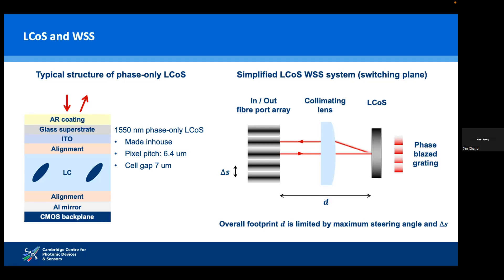For single-mode fiber, the inter-fiber distance is typically 125 microns — pretty much fixed. Currently, due to the limitation from the pixel pitch of 6.4 microns, the steering angle is limited, which is fundamentally determined by the pixel pitch. This determines the horizontal or lateral footprint D. To make D smaller, we need a larger steering angle, and this is where the metasurface comes in.